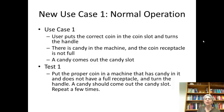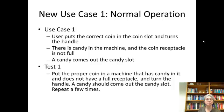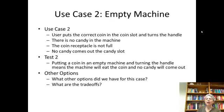Let's refine our first use case, the normal one. The user puts the correct coin in the coin slot and turns the handle; there is candy in the machine, the coin receptacle is not full, so the handle turns and the candy comes out. Our test is to put the proper coin in, turn the handle, and see if we get the candy — and we want to do it more than once to make sure it doesn't just work the first time.